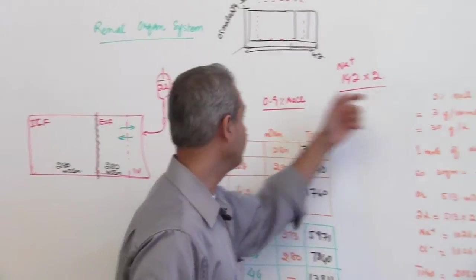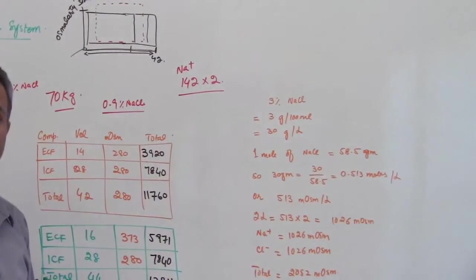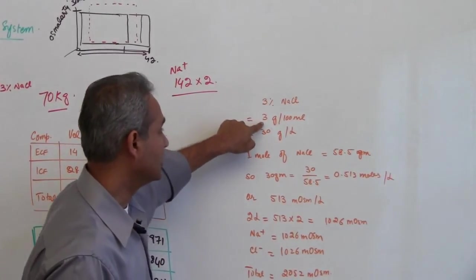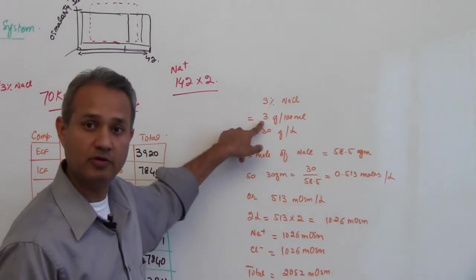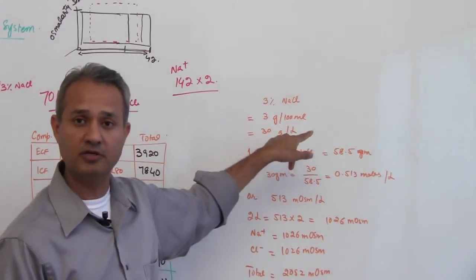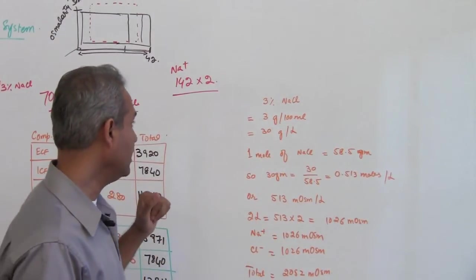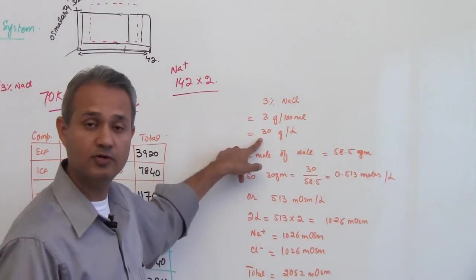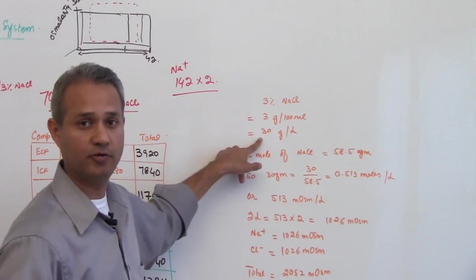So now we go here and we would say okay fine, hang up the 3% sodium chloride and let us see what happens. 3% sodium chloride means 3 gram of sodium chloride per 100 milliliter of fluid, that can also mean 30 gram of sodium chloride per 1 liter of fluid.